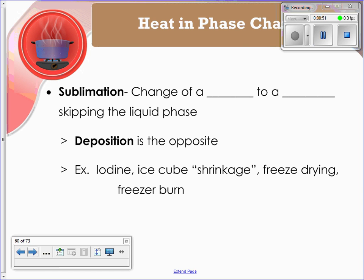Some definitions, just to make sure we're all on the same page. Sublimation is going to be the change of a solid to a gas, skipping the liquid phase. And deposition is going to be the opposite of that. Some examples would be iodine, ice cube shrinkage, freeze drying something, or a freezer burn. Those are two that people tend to forget, so just a reminder of those two definitions.